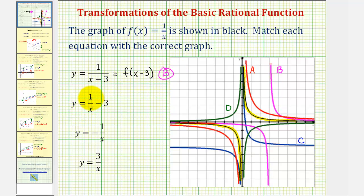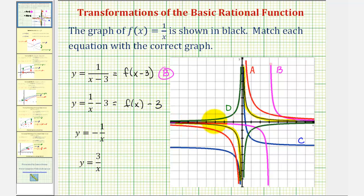Next, y equals one divided by x minus three is equivalent to f of x minus the constant three. Since we're subtracting three from the y values of f of x, this will be the graph of the basic function f of x shifted down three units. Going back to our graph, if we shift the black graph down three units — in the third quadrant and in the first quadrant — we get the graph of the blue function, or graph C.